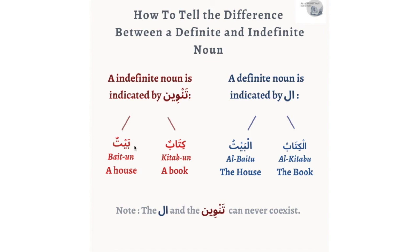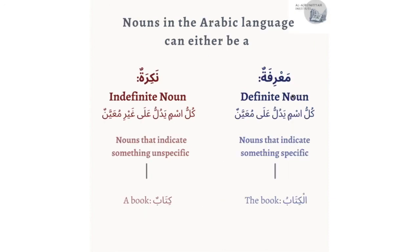To summarize: an indefinite noun is indicated by tanwin — kitabun, baytun — while a definite noun is indicated by al — al-baytu meaning 'the house,' al-kitabu meaning 'the book.' The al means 'the.' Inshallah this is the main thing to understand from this video. Jazakum Allah khairan for listening. Assalamu alaykum wa rahmatullahi wa barakatuh.